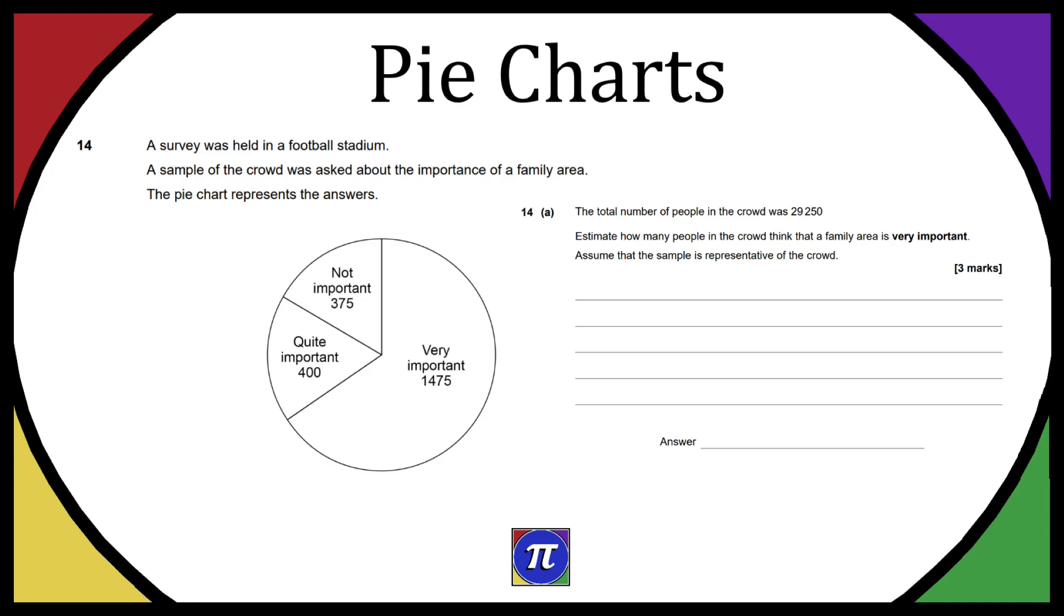We have not important, quite important, and very important, all with varying amounts of answers. For 14a, it says the total number of people in the crowd was 29,250. Estimate how many people in the crowd think that a family area is very important. Assume that the sample is representative of the crowd.